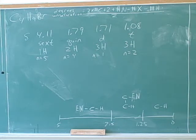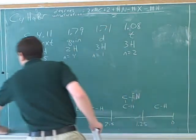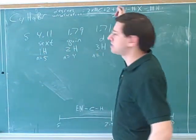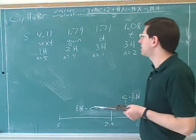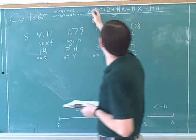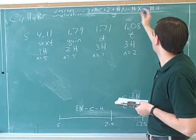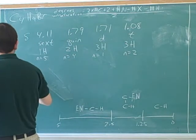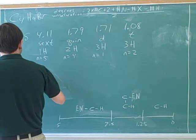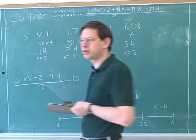Still working or are you done? No, I'm done. Okay, good. That seems like a good process. I'm glad to see that you remember to calculate the degrees of unsaturation. We should always start by calculating the degrees of unsaturation: two times the number of carbons plus two plus the number of nitrogens minus the number of halogens minus the number of hydrogens, divided by two. So that would be two times four plus two minus nine minus one, divided by two, which is zero.